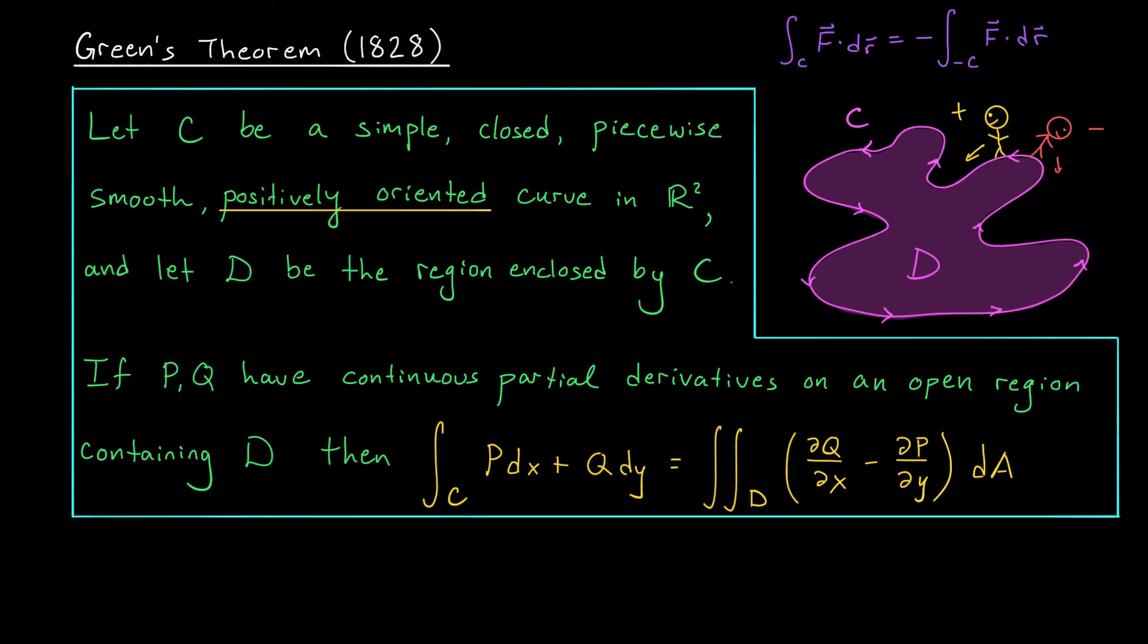If you switch direction when calculating the line integral of a vector field, you're going to get the same answer multiplied by minus 1. This was not the case for line integrals over scalar fields. So orientation is important and we need our curve to be simple, closed, piecewise smooth, and positively oriented.